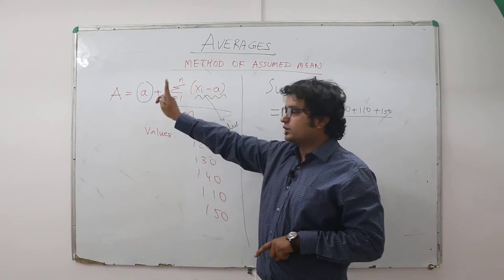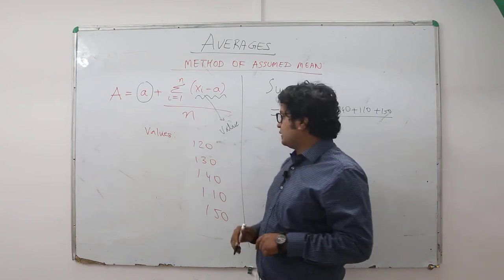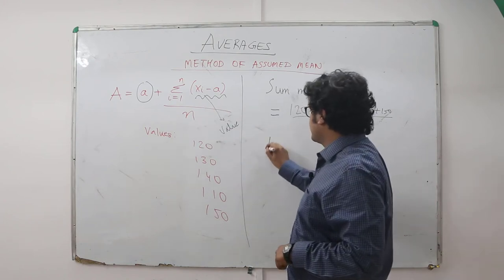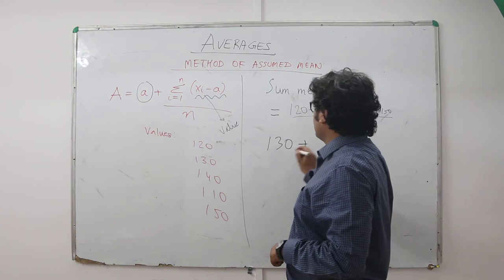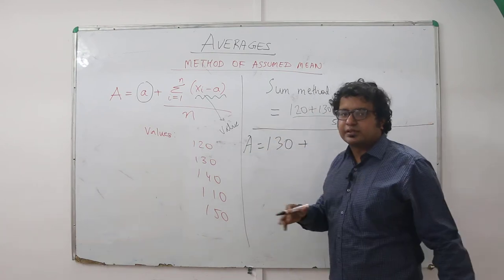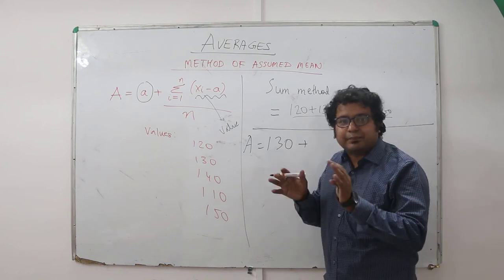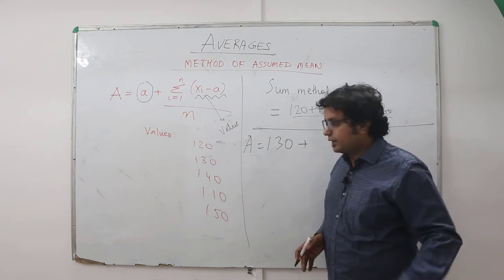Add it to the assumed mean. Let's try to work this out. Let us take the assumed mean as 130. Now what value can you take as assumed mean? Is there a restriction? No there is not. But ideally I take a value which will give me lots of plus minuses and make my calculation shorter.